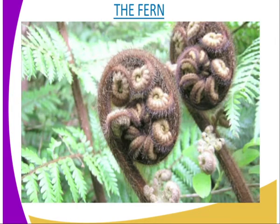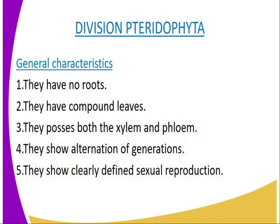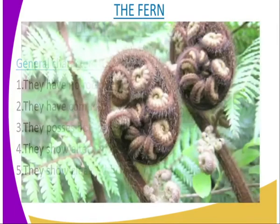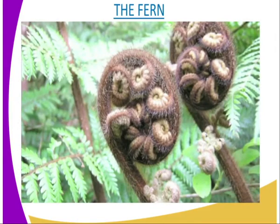We can have the general characteristics of pteridophytes. One: we are saying that they have roots, stem and leaves, but no flowers. So these ones are a little bit differentiated, but what they lack are only flowers, as you can see from our diagrammatic representation — the fern has no flowers. The second characteristic is that leaves are compound with leaflets known as the pinna.